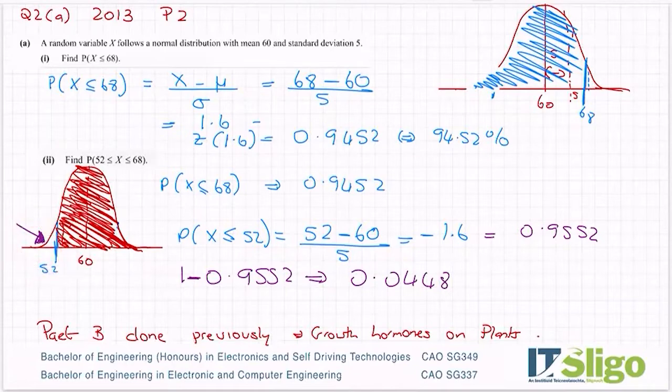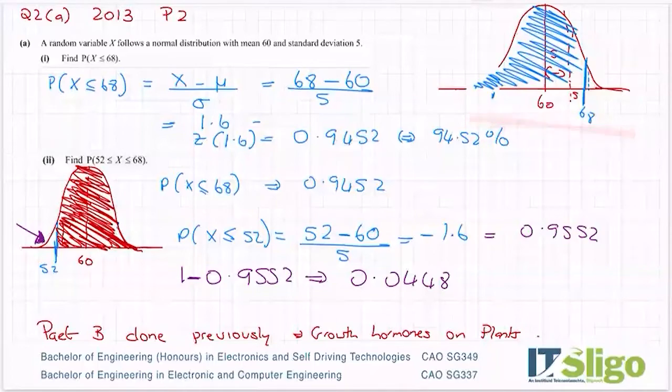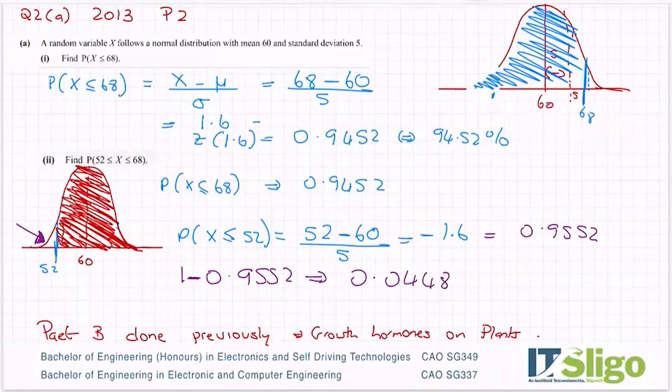Now, why is the area down there so important to me? Well, I'm going to come up to this diagram here. You can see that in this diagram is 68. When I work out this area down here, which is less than 52, can you see now if I subtract this little area from the whole thing, I will be left with just what's between 52 and 68, which is what this question asked for.